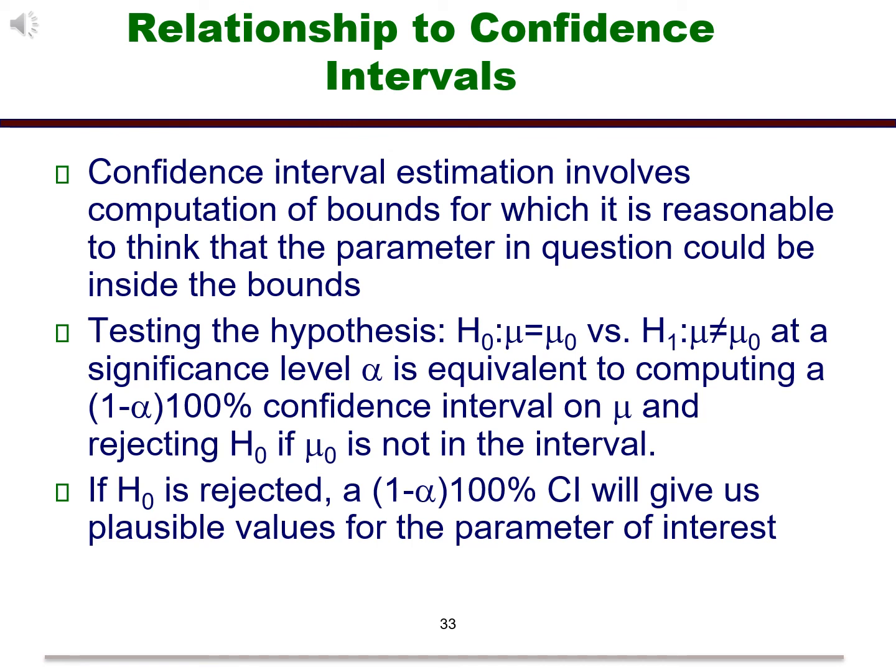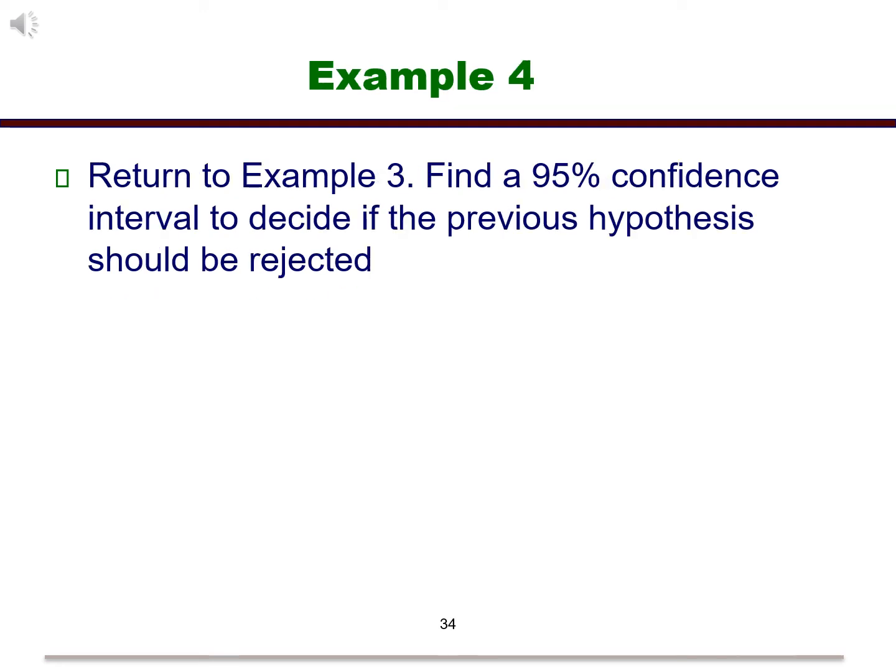There is a relationship between hypothesis tests and confidence intervals. Recall that confidence intervals provide a set of values that the parameter could take on with some level of confidence. We can utilize confidence intervals to make decisions about a hypothesis. We will create the interval, and if the hypothesized value is outside of the interval, then we will reject the null hypothesis. The other advantage of a confidence interval in this case is that if we do indeed reject the null, a confidence interval gives us a valid interval of values that the parameter could take on. Let's go back to example 3 and create a 95% confidence interval and use it to make our decision on the hypothesis in question.